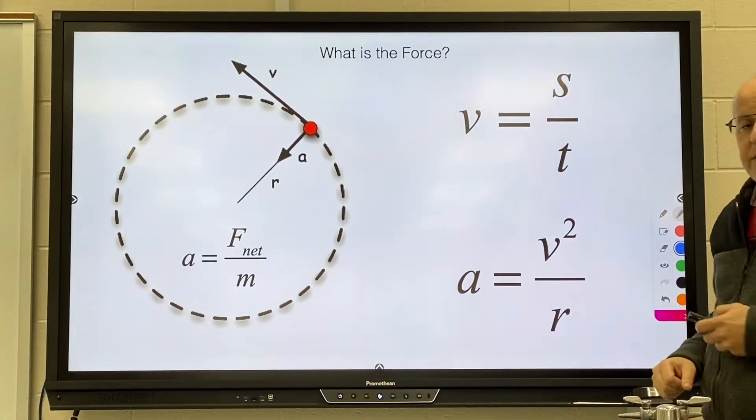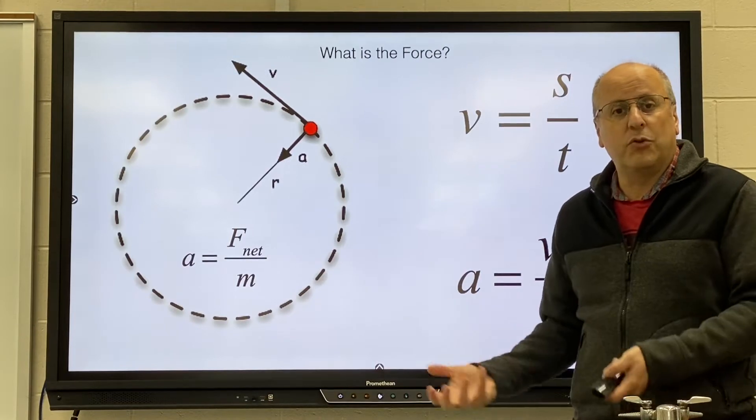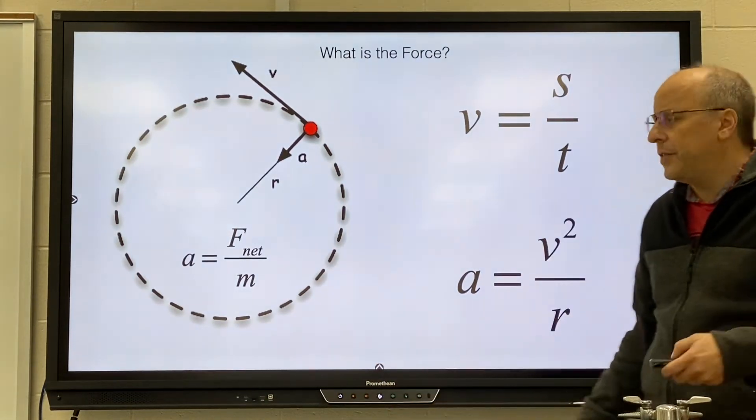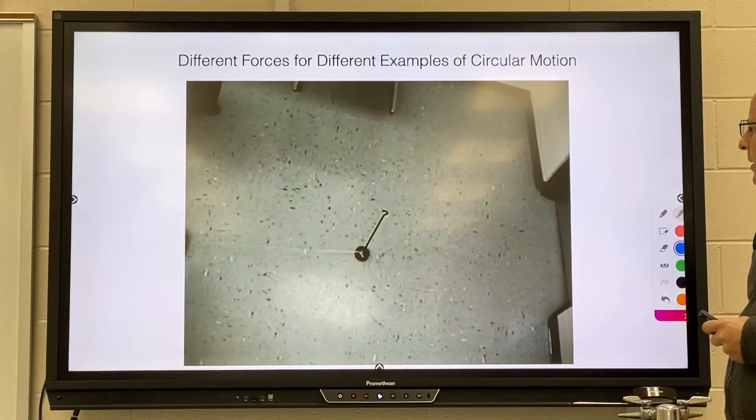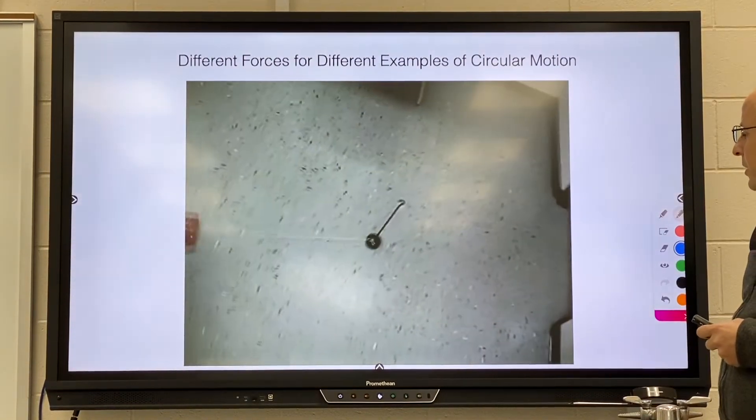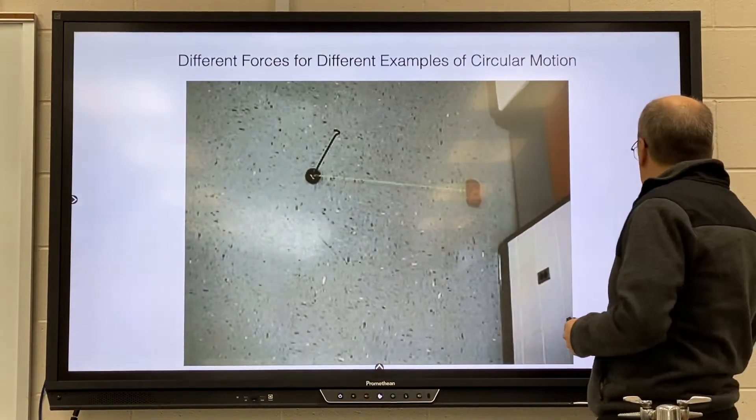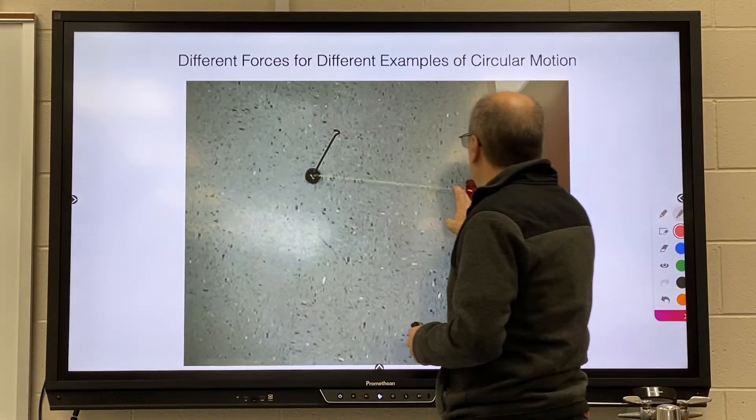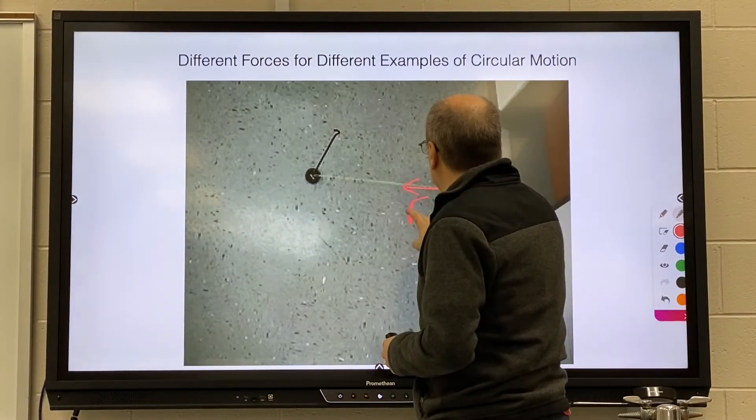What is that force? Is it gravity? Is it tension? Is it normal? Is it some combination of them? It depends on what's happening. So here I have an object on a string that is trying to go in a straight line, and the string is constantly pulling on it. That is force tension.